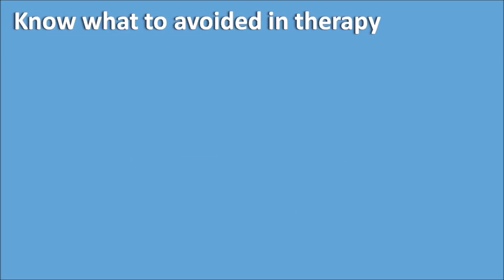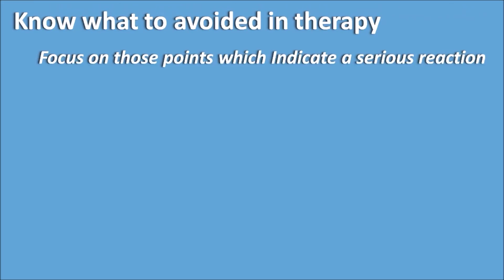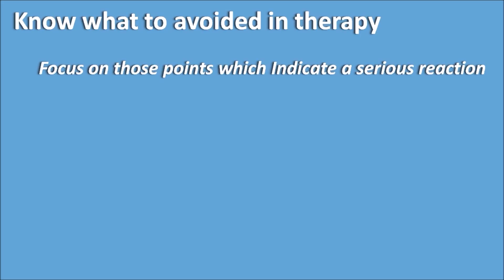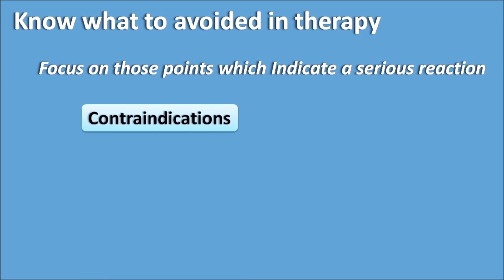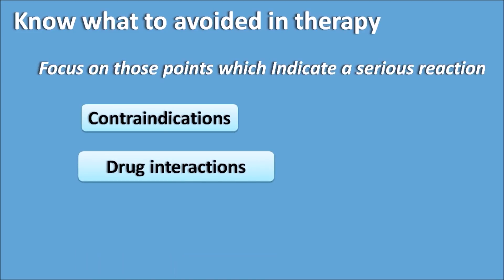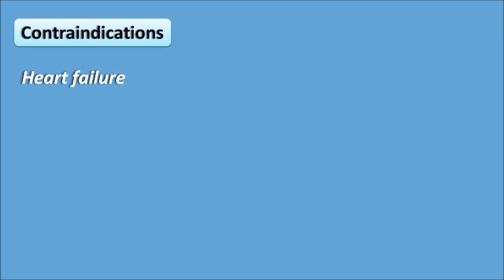You should also know what to avoid in therapy — focus on points indicating a serious reaction or problem, including contraindications and drug interactions. Contraindications are situations in which you should not use a particular drug. For example, in heart failure you should not use calcium channel blockers, as they decrease the force of contraction and will further impair the heart failure.